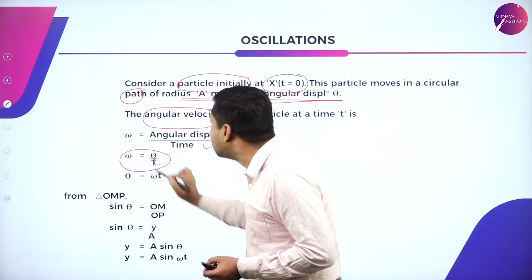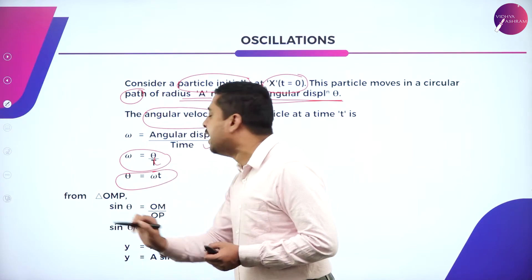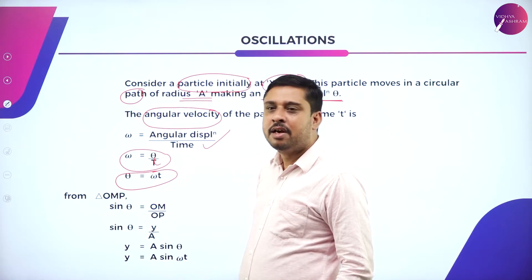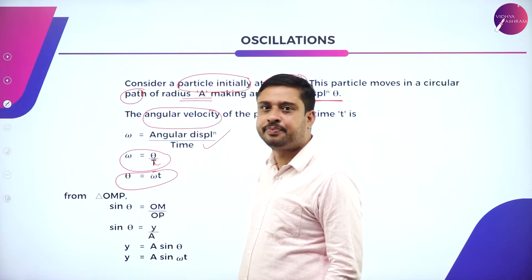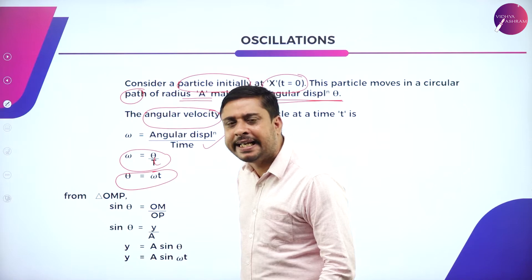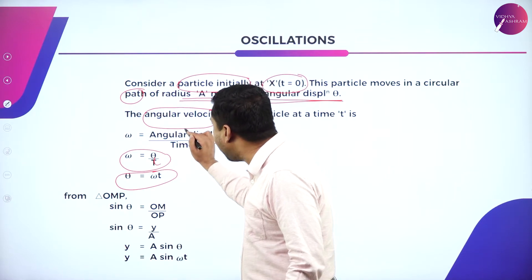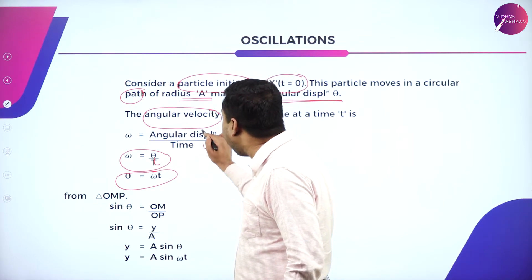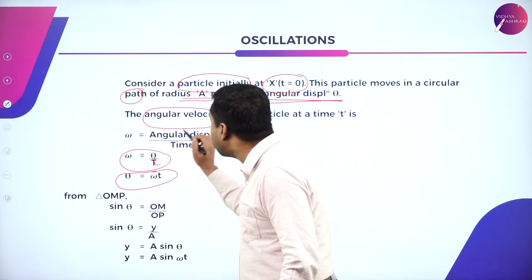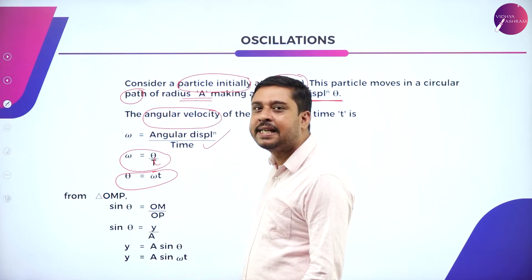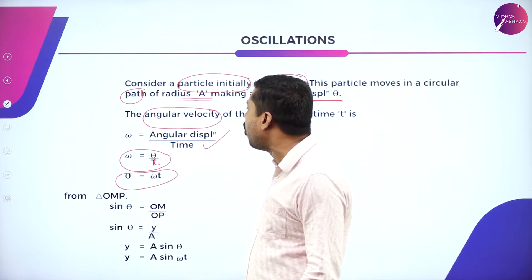Angular displacement is theta and time is T, so omega equals theta divided by T. Therefore, theta equals omega T. This completes the first part of the calculation, where we have calculated the angular displacement theta as omega T.